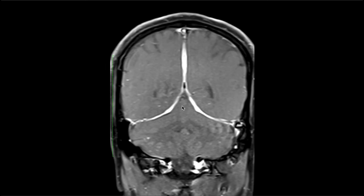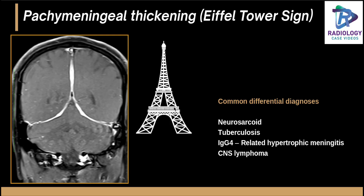This is a classical case of patchy pachymeningeal thickening — the Eiffel Tower sign. Whenever you see such diffuse pachymeningeal thickening, you should always think of neurosarcoidosis and tuberculosis (especially in the developing world), IgG4-related hypertrophic meningitis, CNS lymphoma, Behçet syndrome, and Wegener's granulomatosis. Unlike leptomeningeal enhancement, you may not see enhancement within the gyri. This is a classical Eiffel Tower sign due to pachymeningeal thickening.